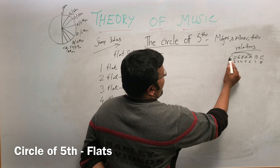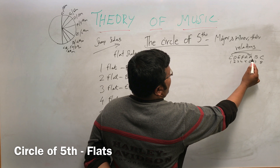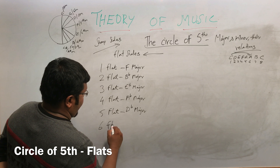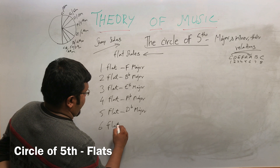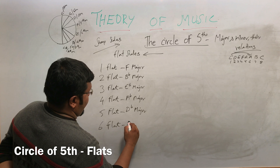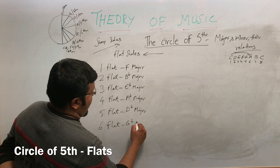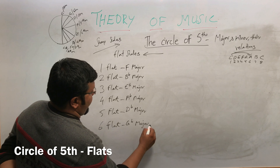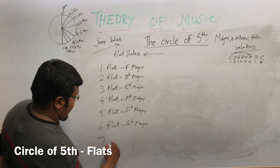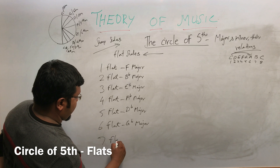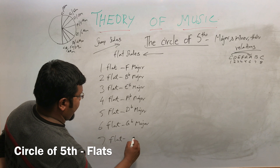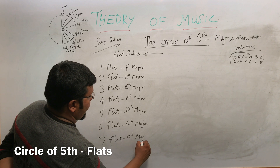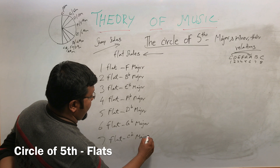The sixth flat scale, counting one, two, three, four, five — that is G-flat major. And the seventh flat scale is C-flat major.